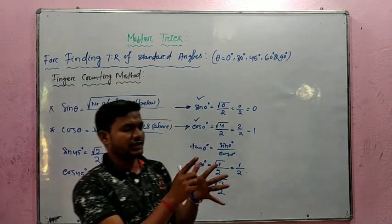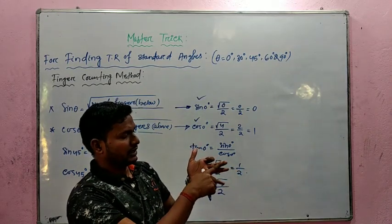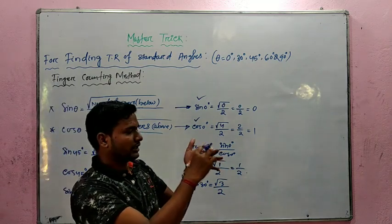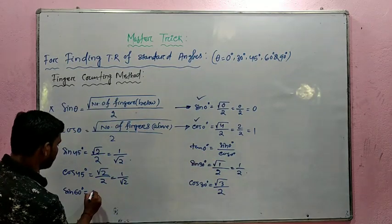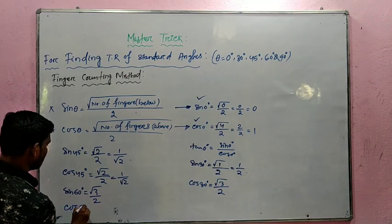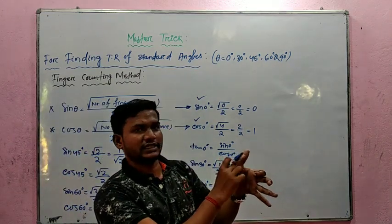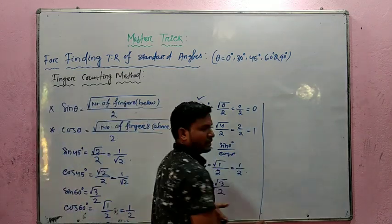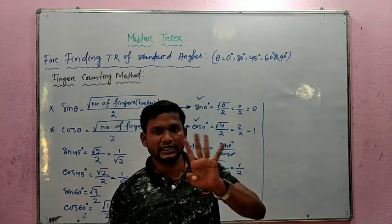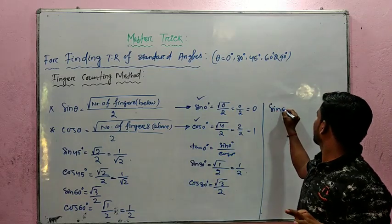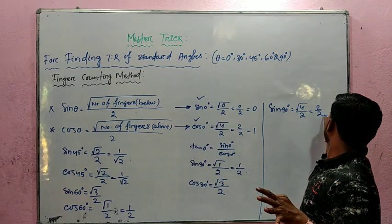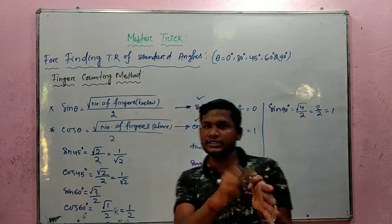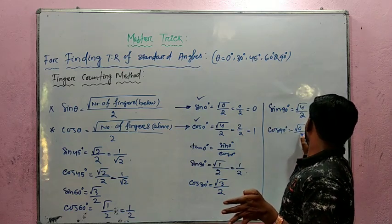For 60 degree: close that finger. The value comes out to root 3 by 2 for sin 60 and 1 by 2 for cos 60. Now for 90 degree: close the thumb. For sin 90, the number of fingers below is 4, so sin 90 equals square root of 4 by 2, which is 2 by 2, equal to 1. For cos 90, fingers above is 0, so cos 90 equals square root of 0 by 2, which is 0.